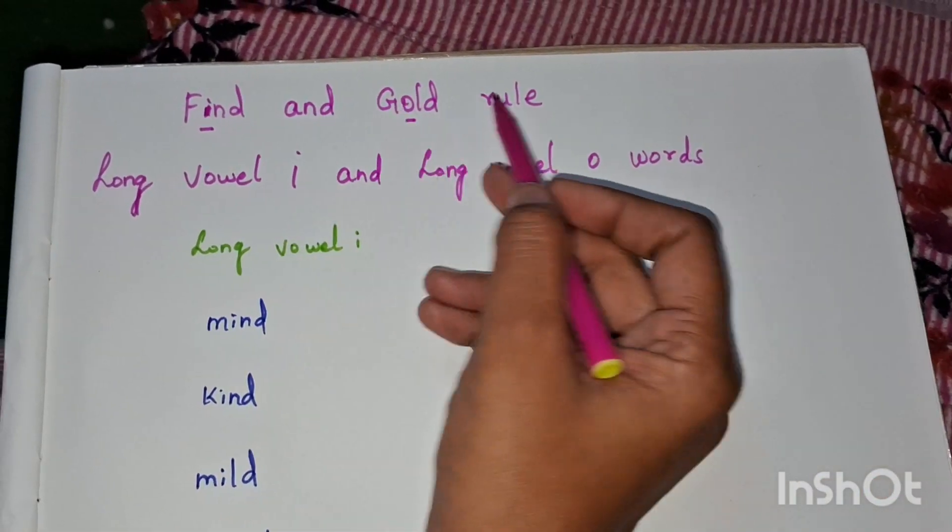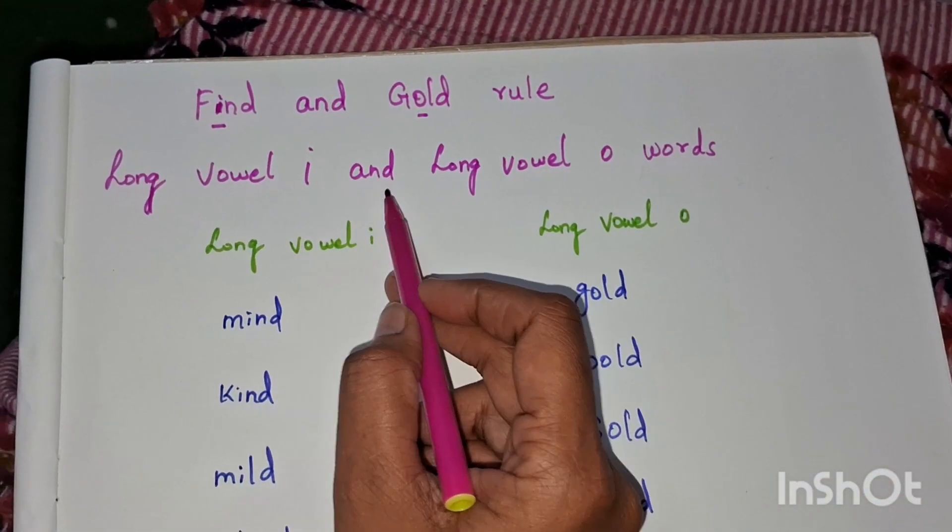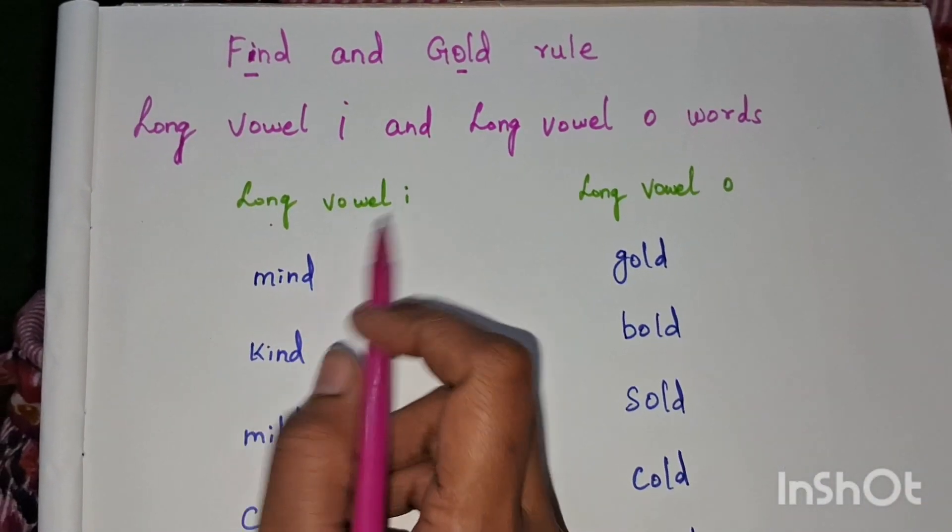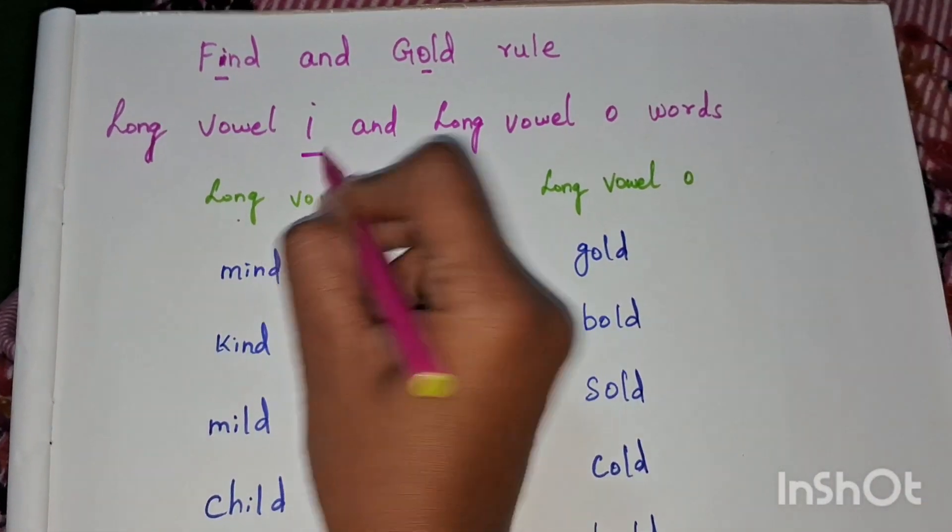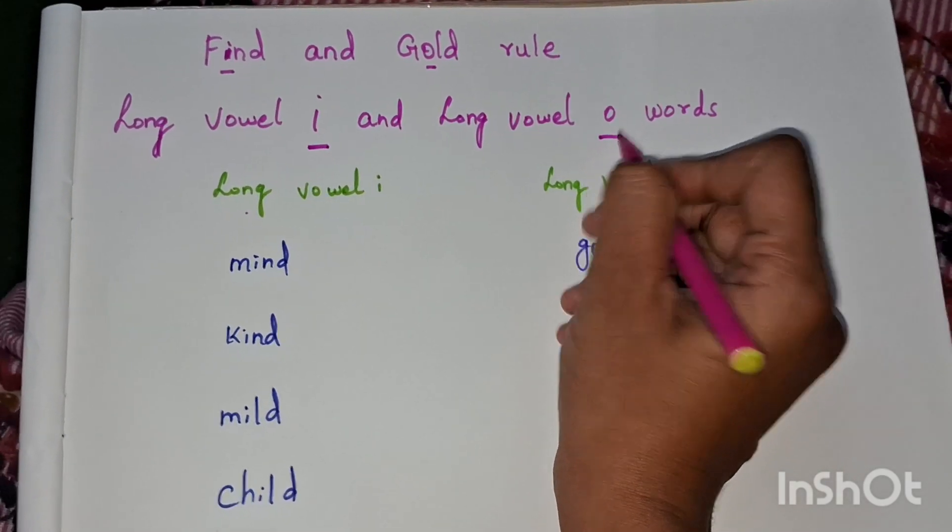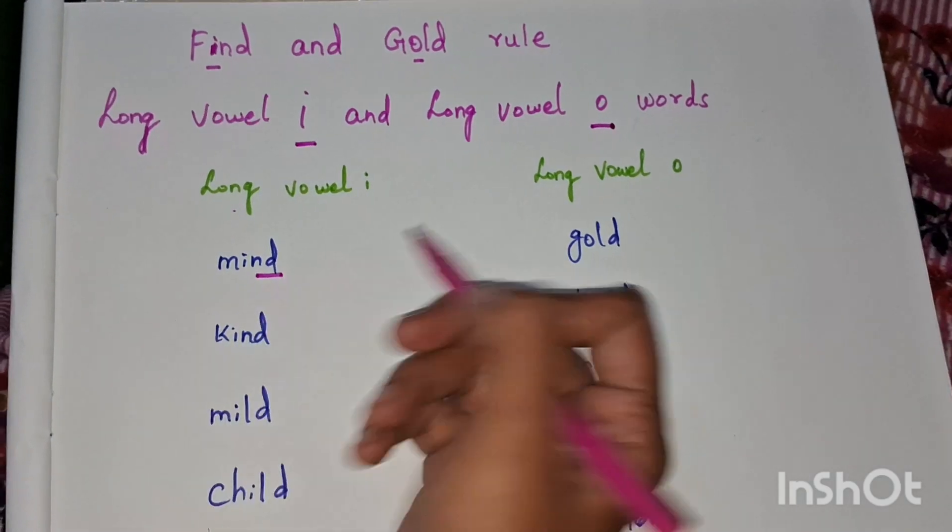Hello everyone. Find and gold rule: long vowel i and long vowel o words. There is a rule - letter i and letter o may say the long sound before two consonants in a closed syllable word.